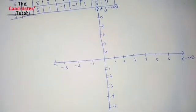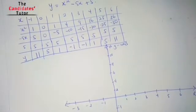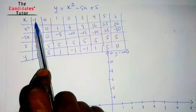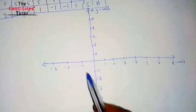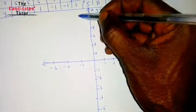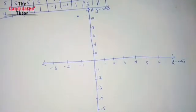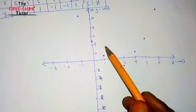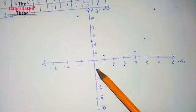Now let's plot the values using the table. From the table, when x equals negative 1, y equals 11, so we plot the point (negative 1, 11). I will go through each coordinate pair and plot them. These are the points plotted on the graph, and I'm sure you know how to plot coordinates.